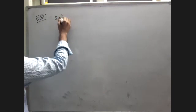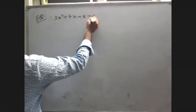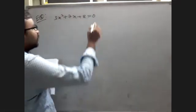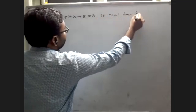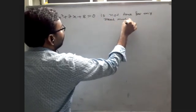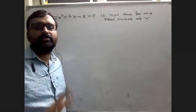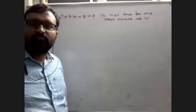Now a different topic from previous classes — about imaginary roots. Example 8: Show that the equation 3x² + 7x + 8 = 0 is not true for any real number of x. Not true for any real number means it is true for imaginary numbers, so we need to show Delta less than 0.